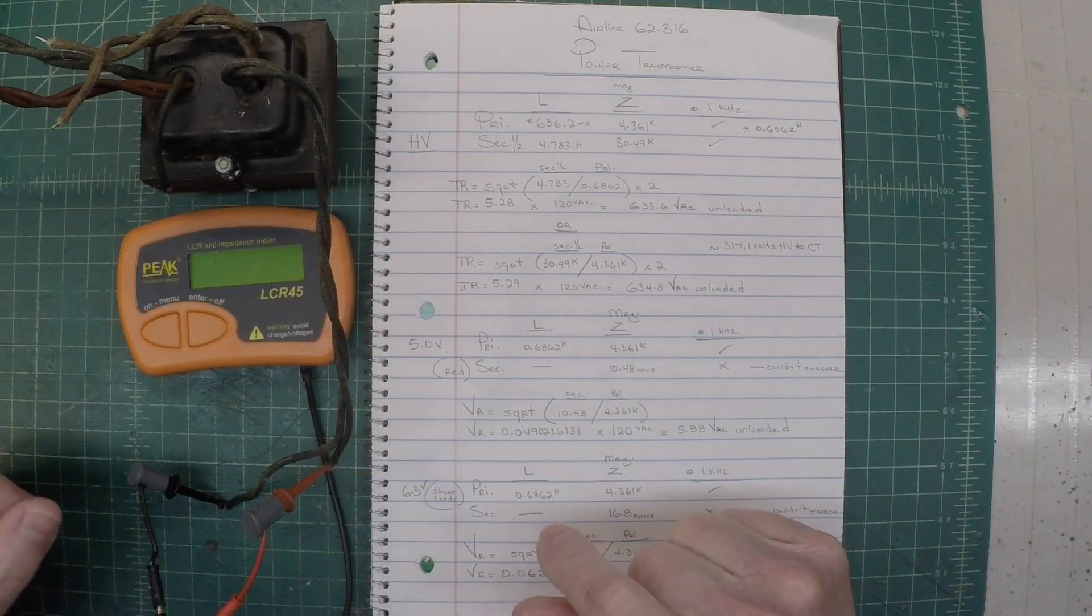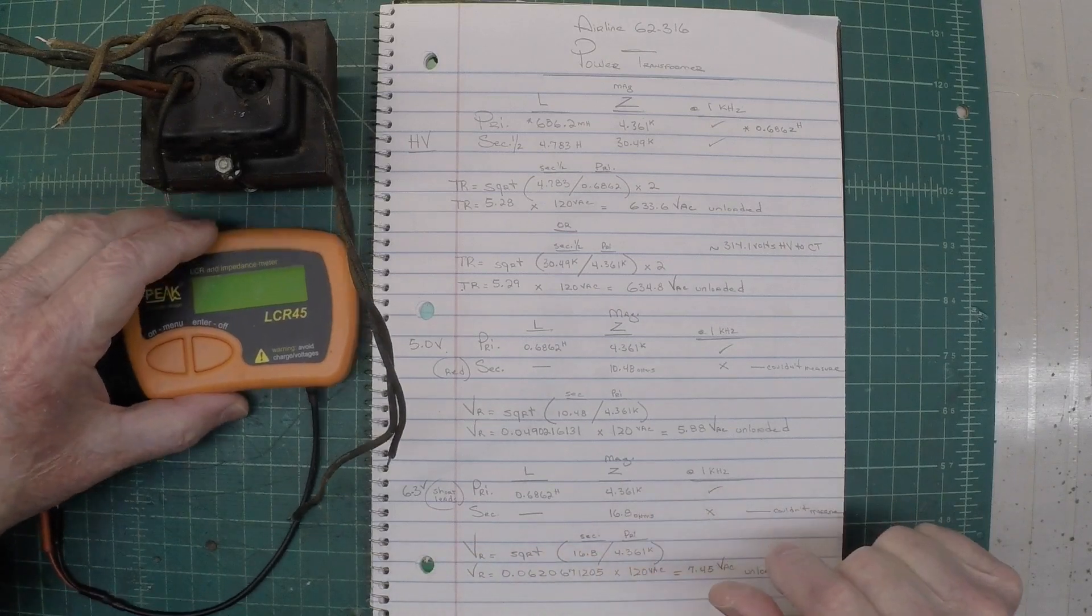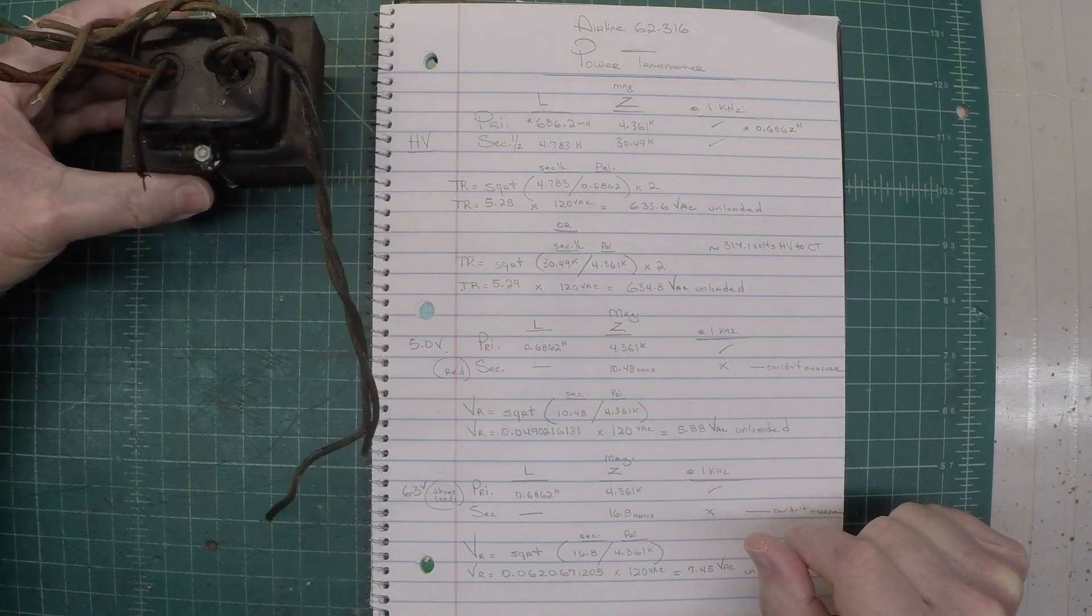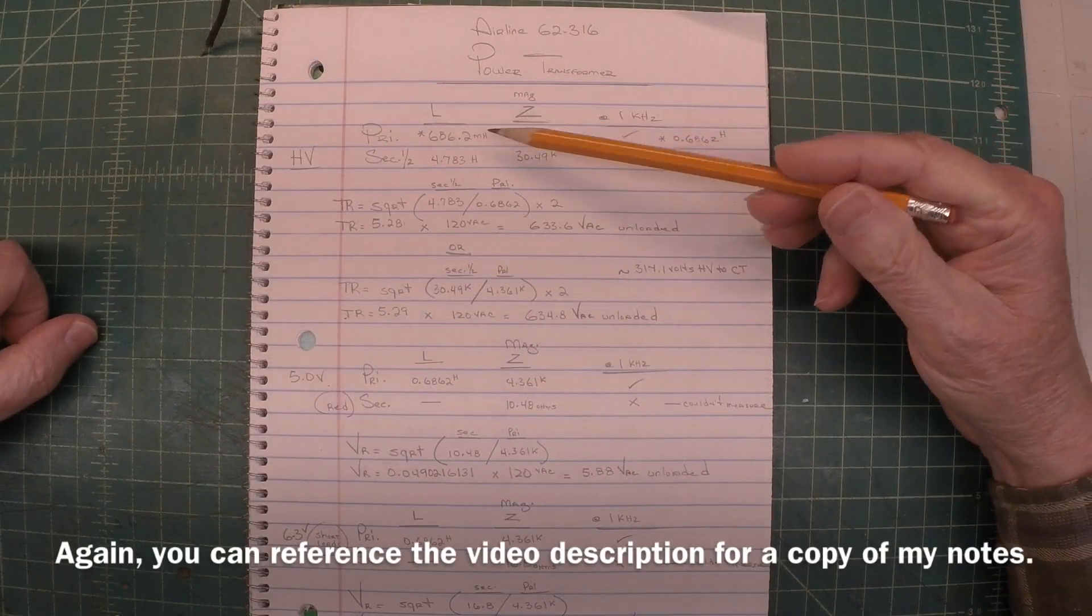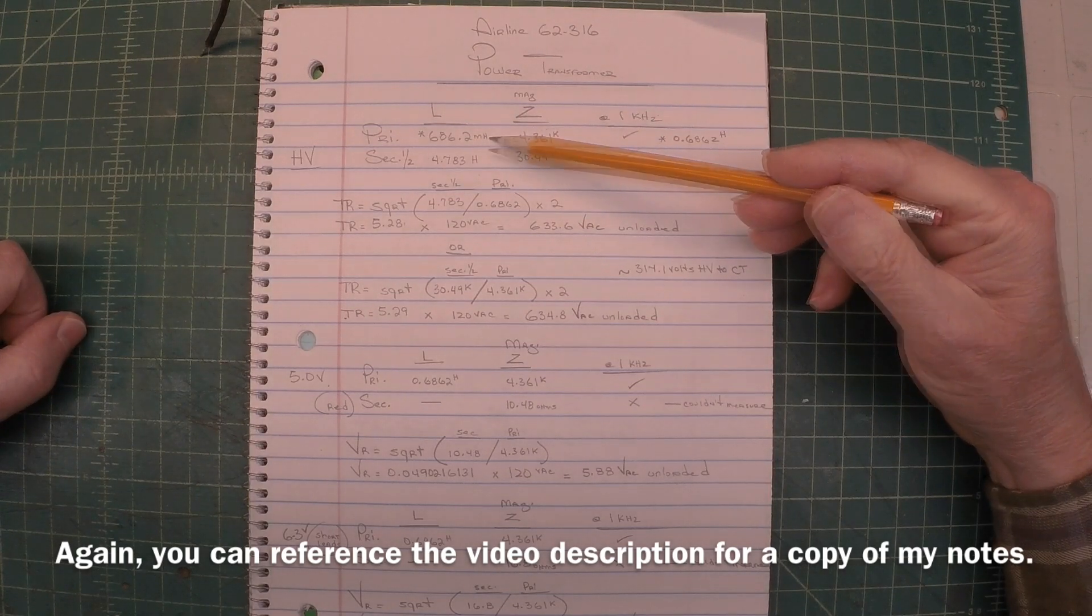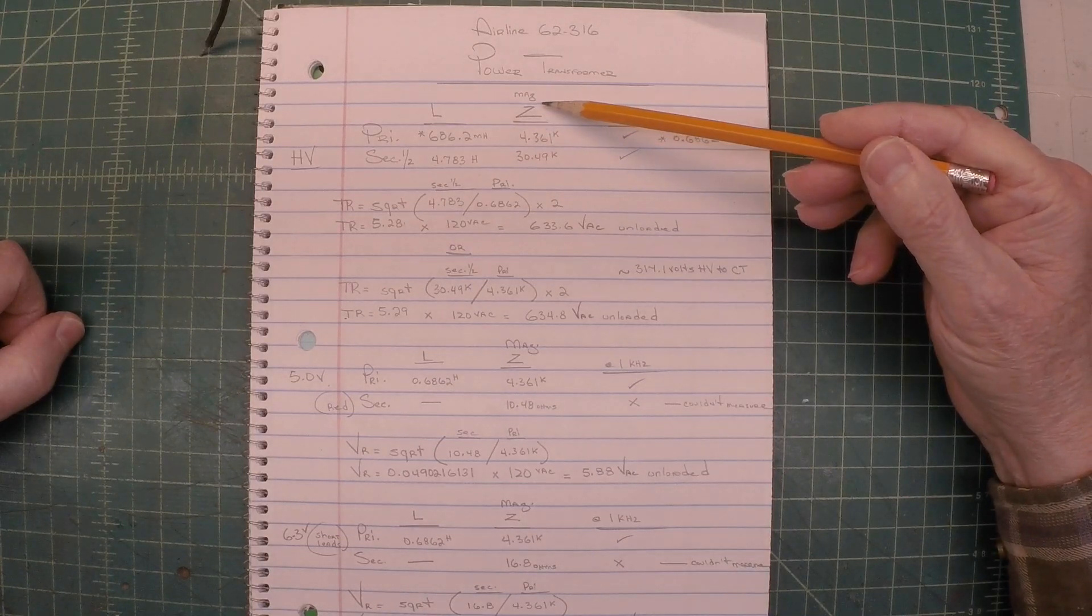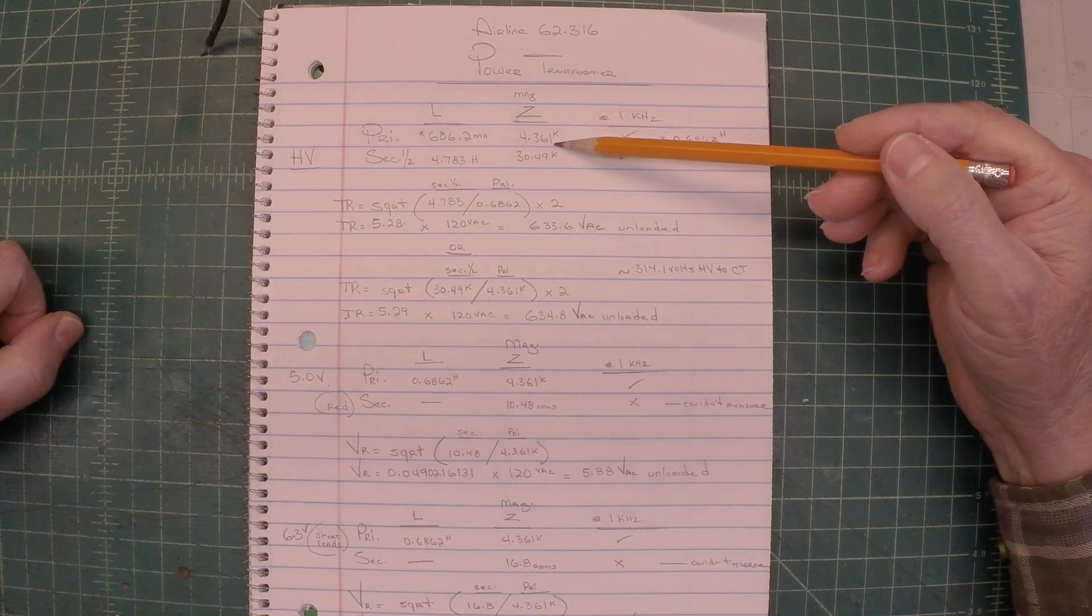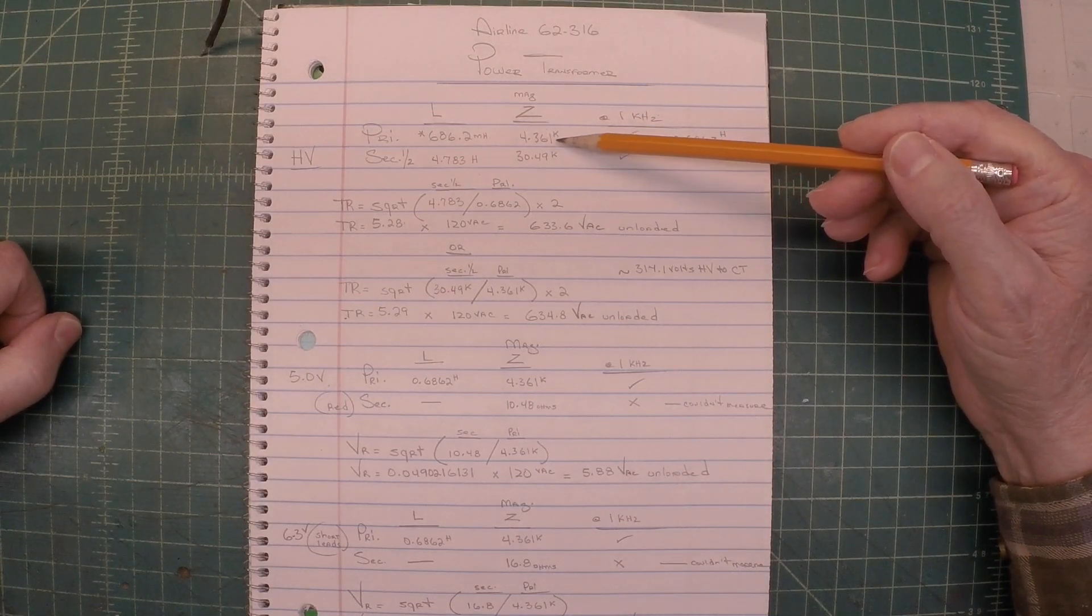So I've recorded the magnitude of impedance for the primary and secondary windings. Let me unhook the LCR meter and just get this off to the side. And let's look at these calculations a little closer here. Using the data that I captured this morning, you can see the primary inductance called out and the secondary inductance. And the magnitude of the impedance is indicated for the primary and secondary.